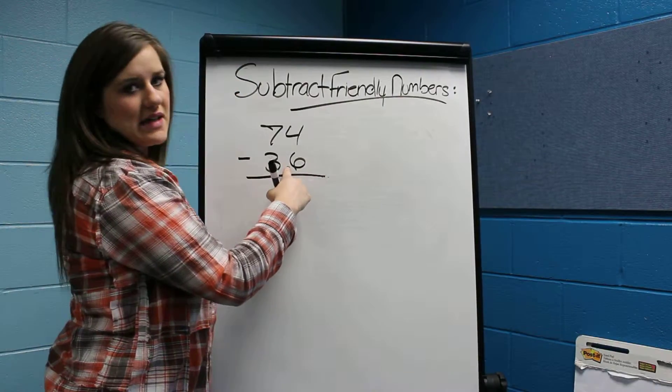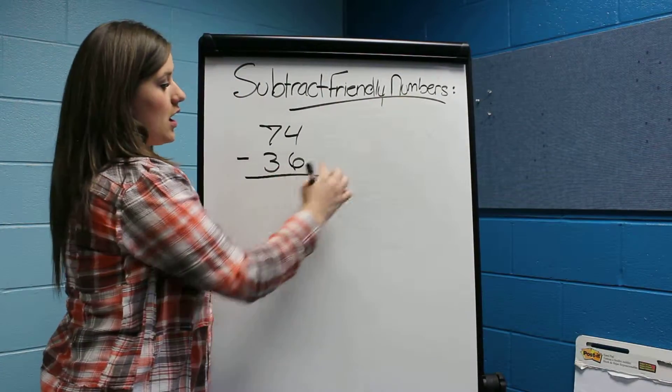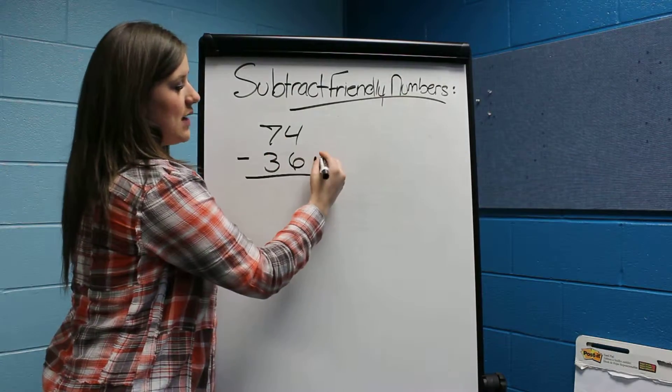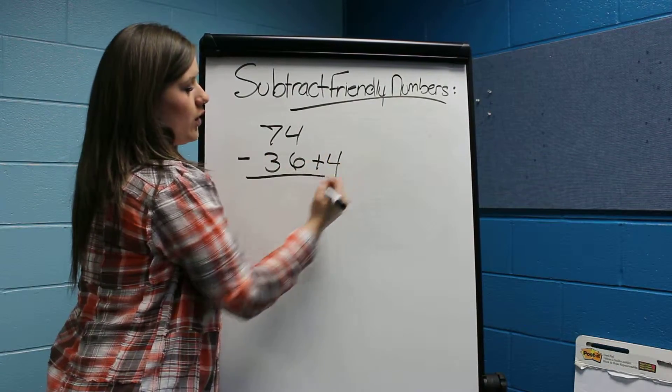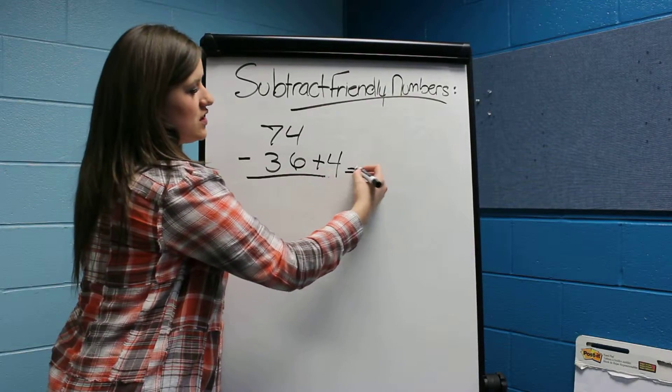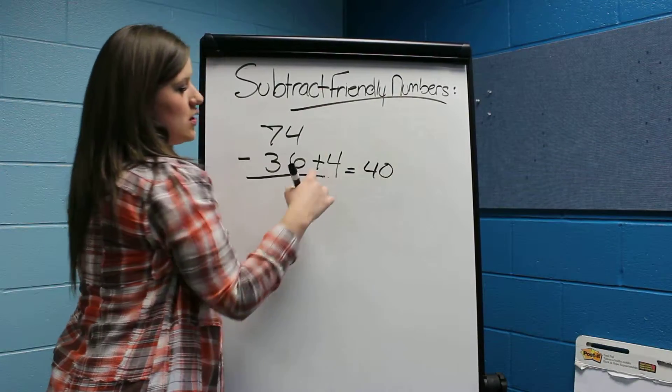Down here at the bottom, I want to make this 36 an even number or a bigger number, so I want it to end with zero. I'm going to add 4 to 36 which equals 40. So whatever I add down here at the bottom, I've got to add here at the top as well.